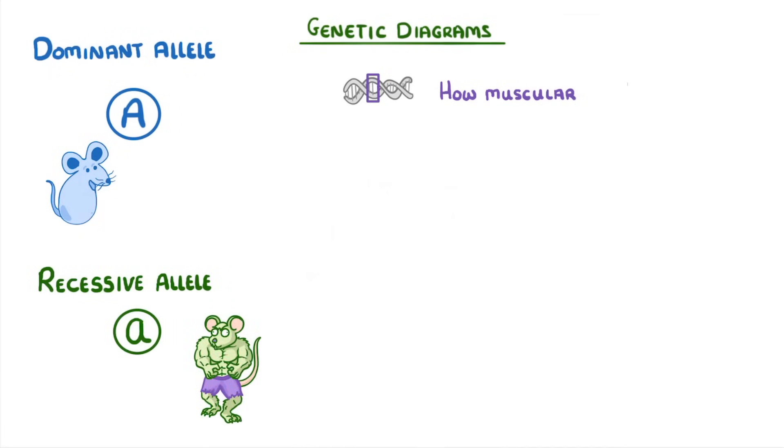If you haven't seen this idea of representing alleles with letters before, basically we show the two different alleles that an individual has as upper and lowercase versions of the same letter, with the uppercase letter meaning it's dominant and the lowercase one being recessive.